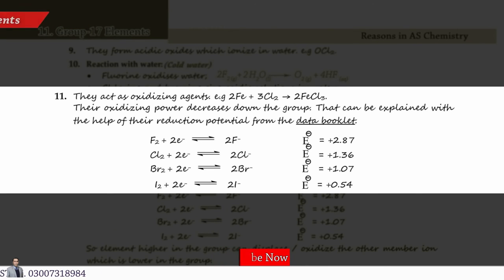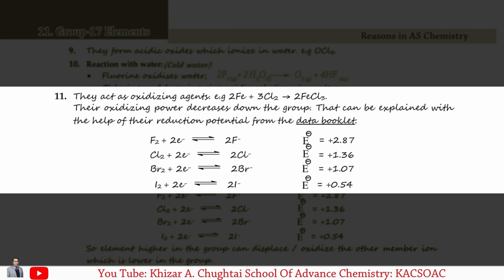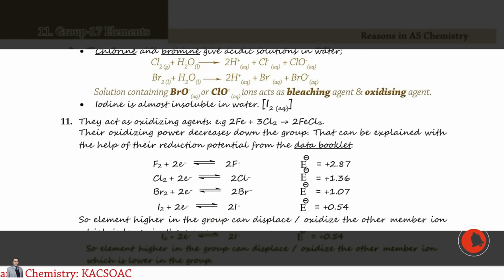Next point: they act as oxidizing agents. For example, when iron is allowed to react with chlorine, it makes iron(III) chloride. Oxidizing power decreases down the group, which can be visualized with the help of the data booklet. In the data booklet, higher the number of the halogen means higher the power to gain the electron and vice versa.